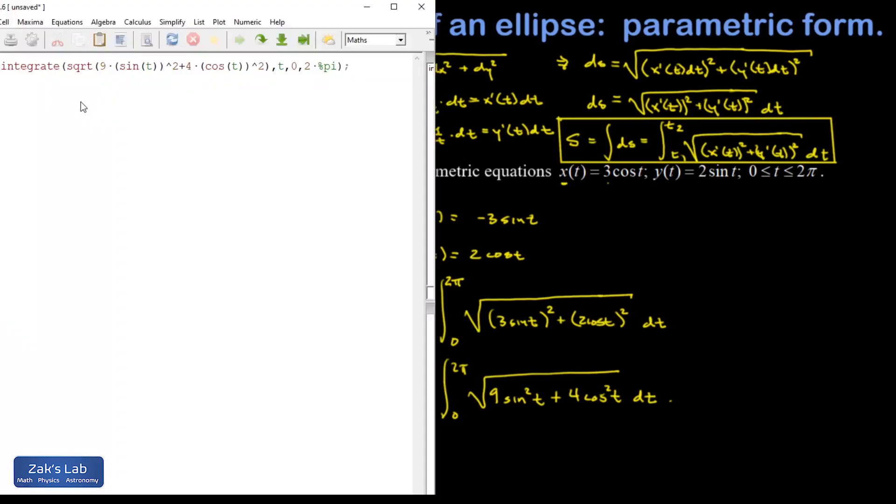So here we are in Maxima. And I'm just trying to illustrate it first. If I try to use the integrate command, Maxima is going to try to find a symbolic antiderivative to this thing. And I hit shift enter. And it just repeats the same integral to me. So that's Maxima's way of saying that there is no analytical solution to this integral. And that means we have to use a numerical approximation. And for that, we use the quad QAG function.